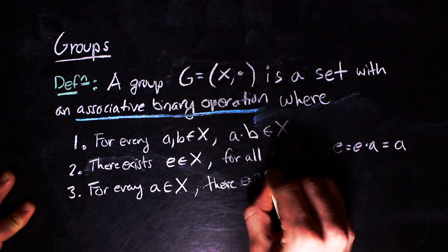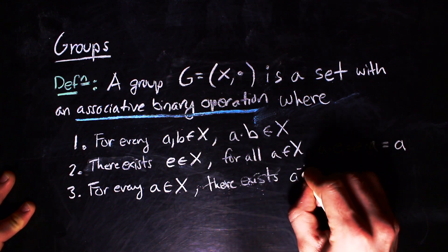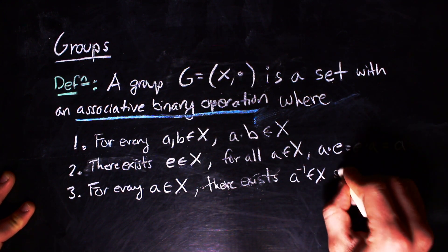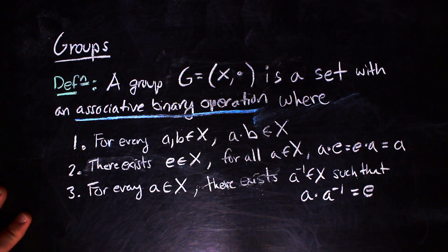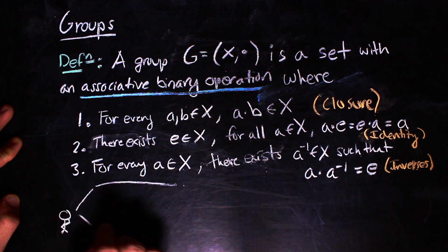There are also inverses for every element. So if you have an element A, there exists something in the group that you can compose it with such that you get back to the identity. Usually this is denoted as A to the negative one.